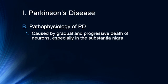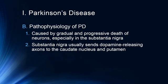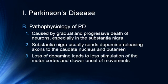In terms of the pathophysiology of Parkinson's disease, it's caused by a gradual and progressive death of neurons, particularly the dopaminergic neurons of the substantia nigra. The substantia nigra usually sends dopamine via axons to the caudate nucleus and the putamen. The loss of this dopamine leads to less stimulation of the motor cortex and slower onset of movement — this is a very complex picture of how Parkinson's affects the motor system.